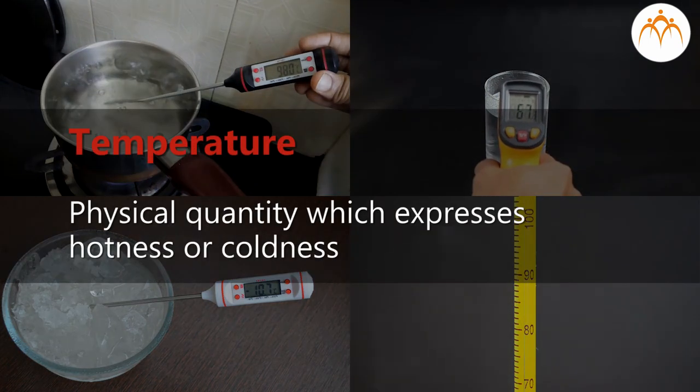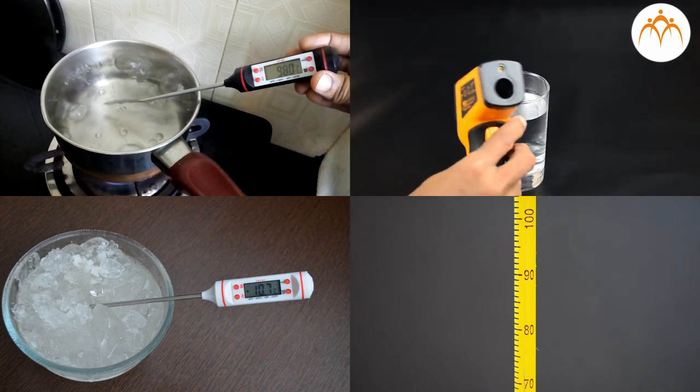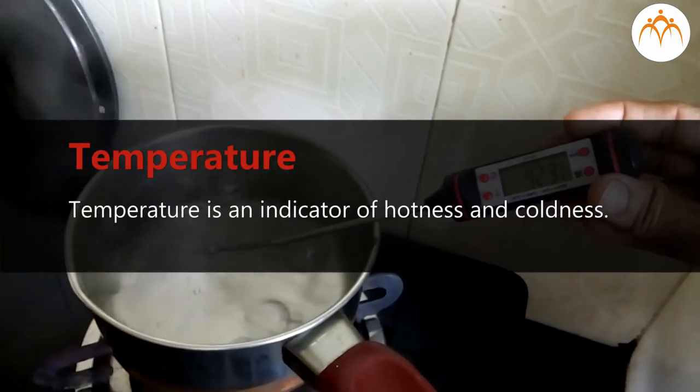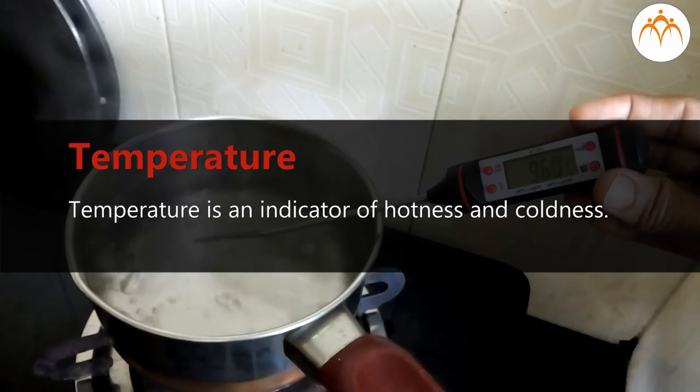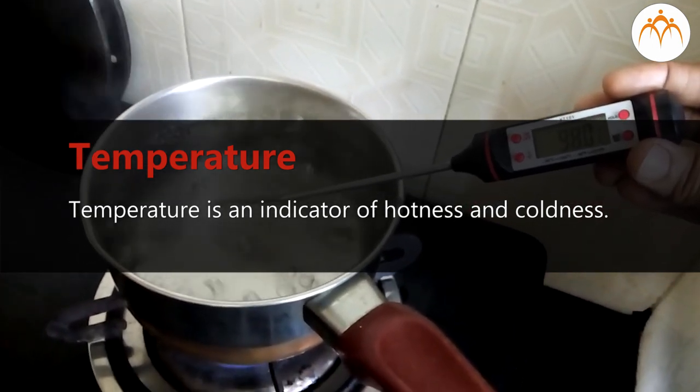Temperature is the physical quantity which expresses hotness or coldness. It is measured with a thermometer. Temperature does not measure the total amount of heat in a substance. It is the indicator of hotness or coldness.